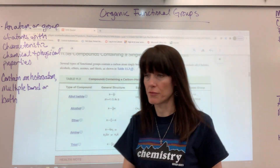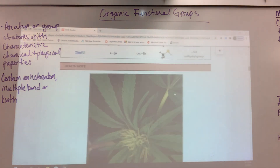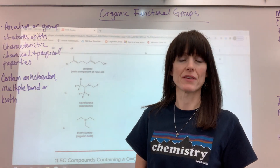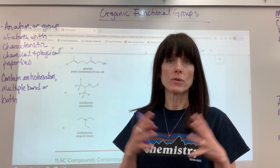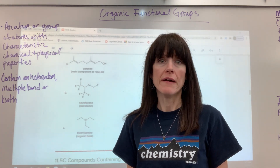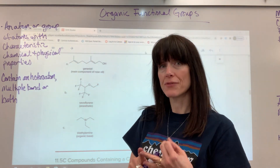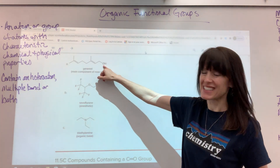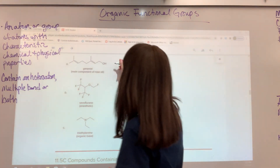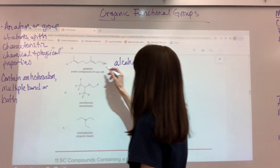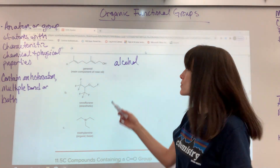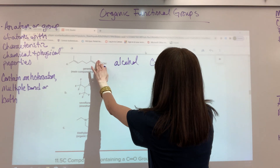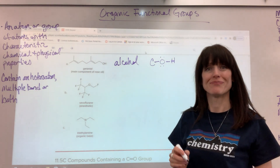Let's do a little practice. You can have multiple functional groups in the same molecule — they could be the same or different — and you want to identify every one. Looking at this first example, I see that OH at the very end, which is an alcohol. In the skeletal structure, that's the carbon with a single bond to oxygen, single bond to hydrogen — there's your alcohol.